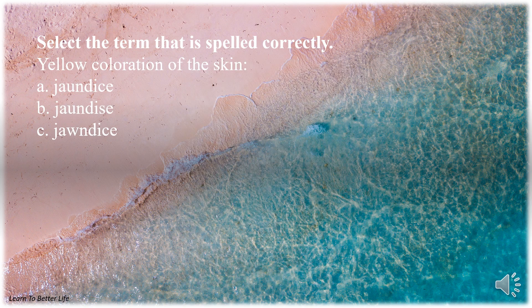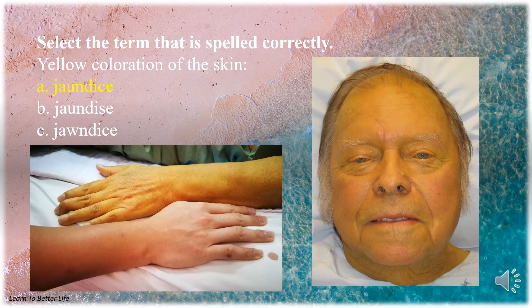Select the term that is spelled correctly. Yellow coloration of the skin. A. Jaundice with the C. B. Jaundice with the S. C. Jaundice with the W. The answer is A. Jaundice with the C.